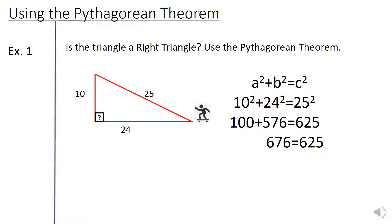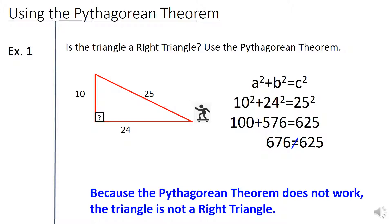But wait, that does not work. They do not equal each other. There's a problem here. We plugged everything into the Pythagorean theorem and worked it out, but the left side did not equal the right side. Because the Pythagorean theorem does not work, the triangle is not a right triangle. And that must not be a right angle. So let's see how that works out for the skateboarder.